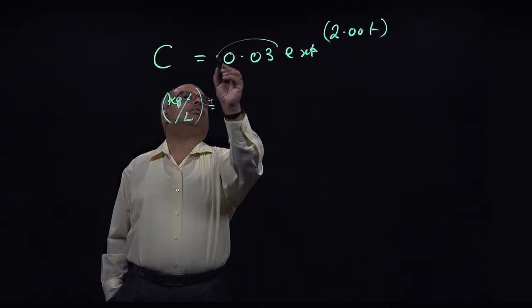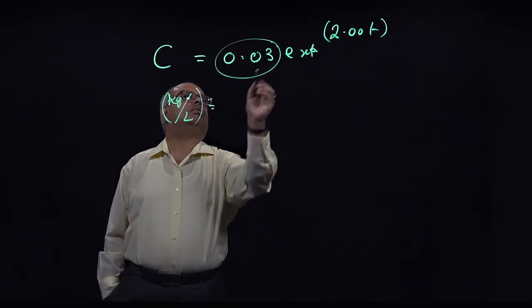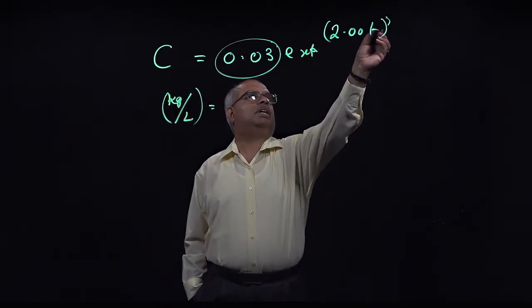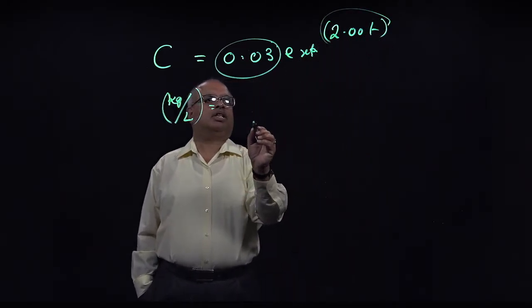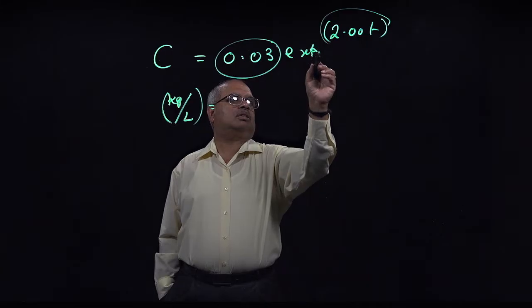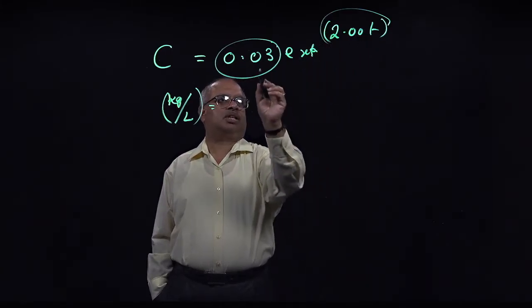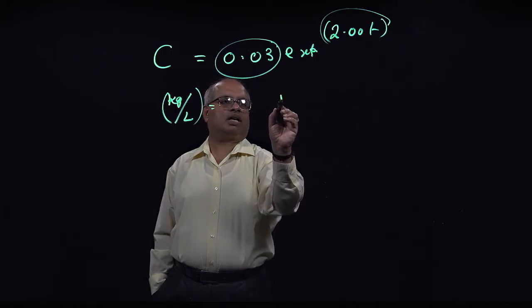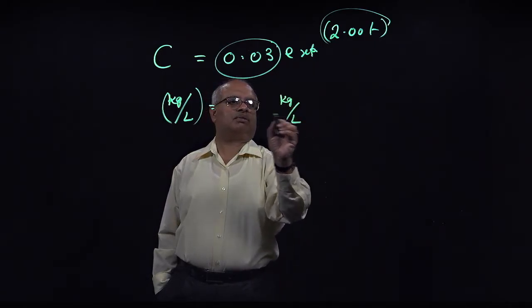So this 0.03, what should be the dimensions here? And what should be the dimensions of this one? Because the exponent should be dimensionless, this 0.03 should have dimensions of kilograms per liter. Okay?